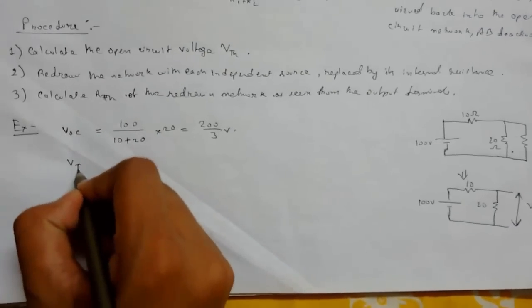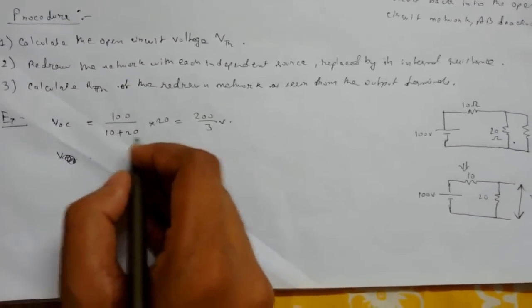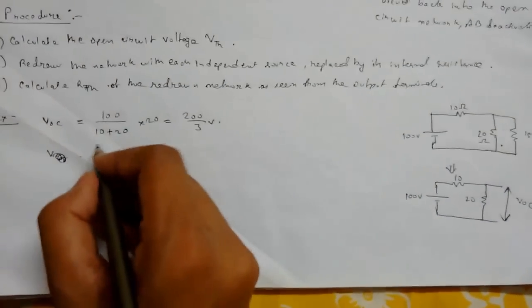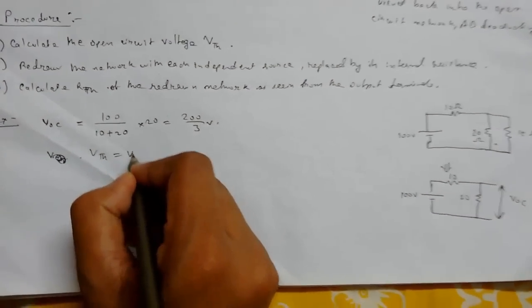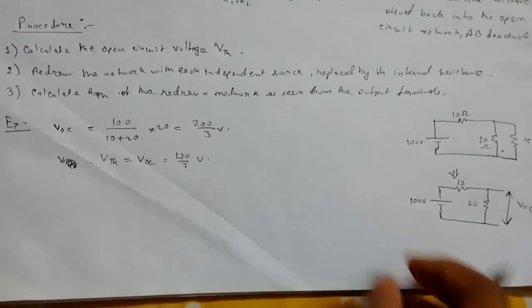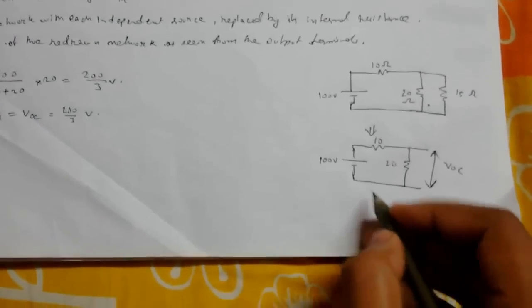Now we need to find the Thevenin equivalent resistance. So the VOC is the Thevenin voltage, so Vth equals VOC equals 200 by 3 volts. Now next, removing the source for the internal resistance: